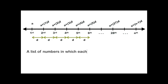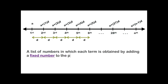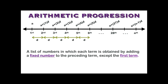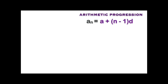A list of numbers in which each term is obtained by adding a fixed number to the preceding term (except the first term) is called an Arithmetic Progression. The fixed number is called the common difference. The general term of an AP, denoted aₙ, is given by the formula: aₙ = a + (n − 1)d.